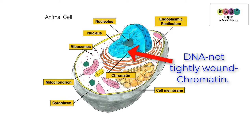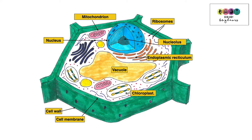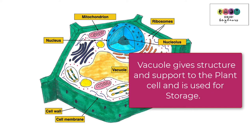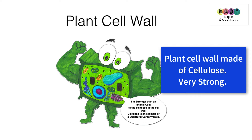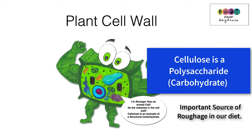Looking at the ultra-structure of the plant cell, many labels are the same: mitochondria, nucleus, nucleolus, ribosomes, and cell membrane. But there are unique features: a cell wall on the outside of the cell membrane, chloroplasts where photosynthesis takes place, and a large permanent vacuole filled with cell sap for structure, support, and storage. Plant cells are much stronger than animal cells because of the cell wall, which is made of cellulose — a polysaccharide and an important source of roughage and fibre in our diet.